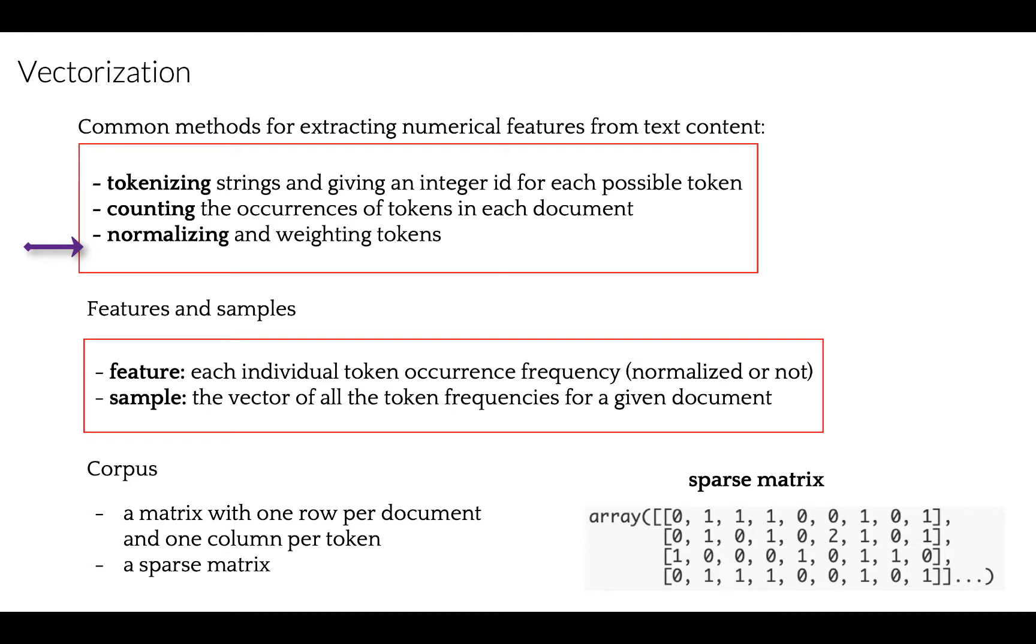In this representation, features are individual token occurrence frequency, normalized or not, and sample is the vector of all token frequencies for a given document. A corpus of documents can be represented by matrix with one row per document and one column per word that occur in a corpus.